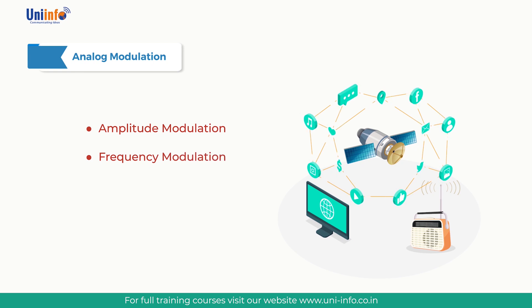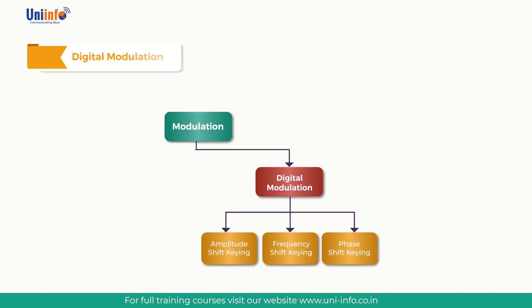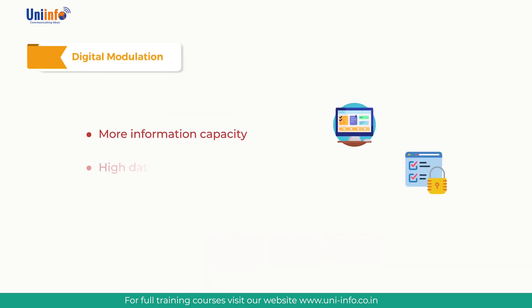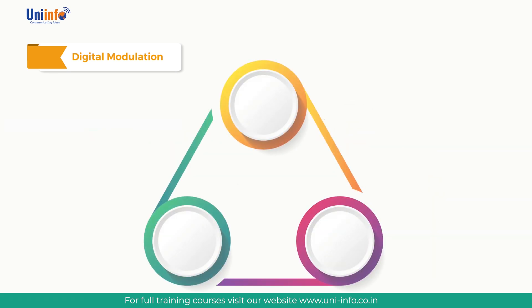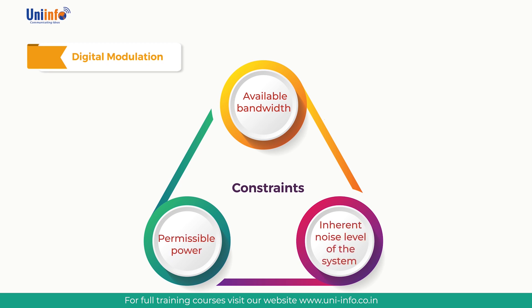Digital modulation provides more information capacity, high data security, quicker system availability, and great quality of communication. Developers of communication systems face constraints: available bandwidth, permissible power, and the inherent noise level of the system. The RF spectrum must be shared, yet every day there are more users as demand for communication services increases. Digital modulation schemes have greater capacity to convey large amounts of information than analog modulation schemes.